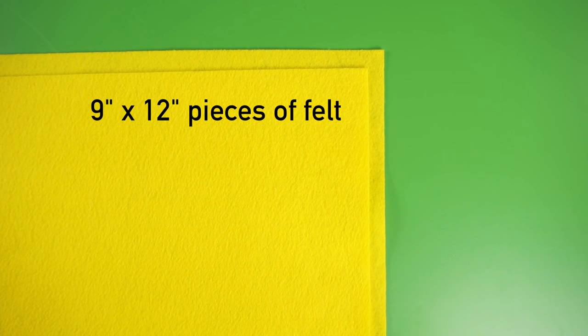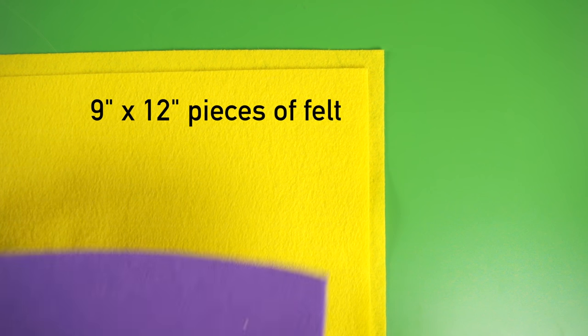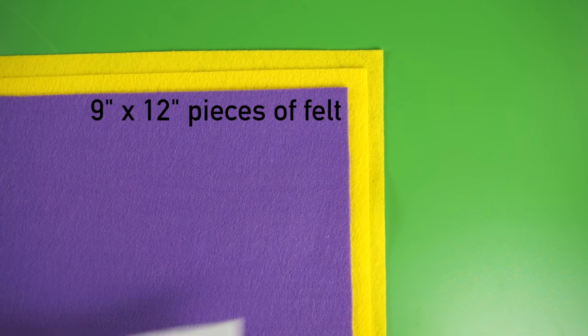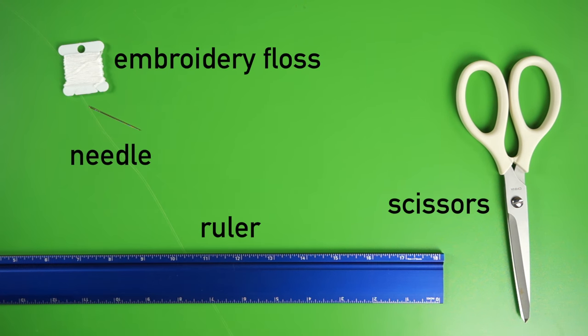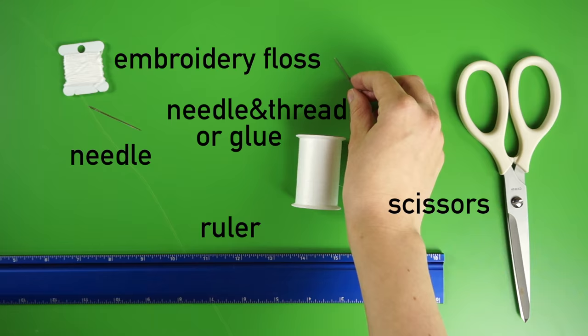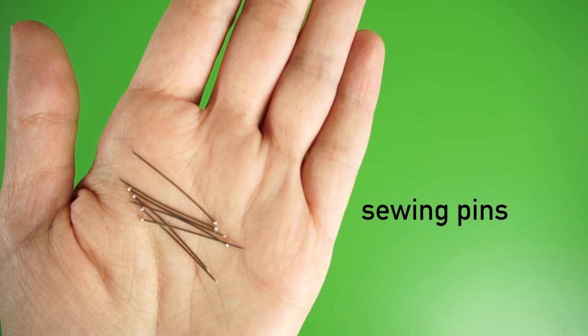To make this project, you'll need two 9x12-inch pieces of citrus-colored felt and one for the cover of your wallet, a small piece of white felt, a ruler, scissors, embroidery floss, an embroidery needle, and either a needle and thread or fabric glue for attaching the citrus design, and sewing pins.